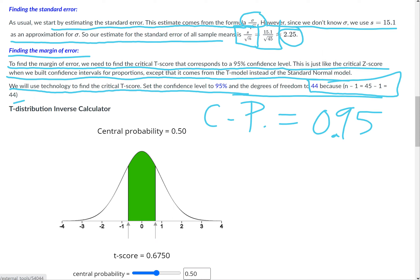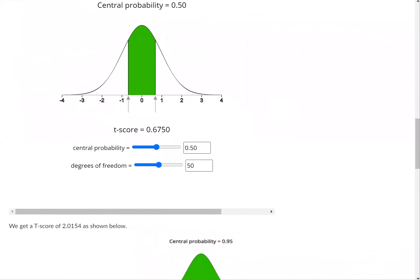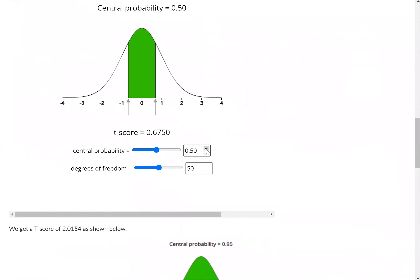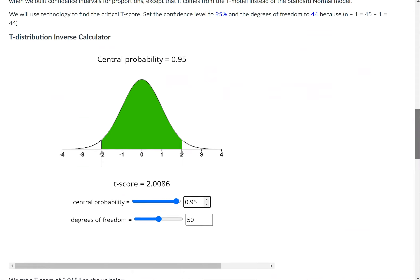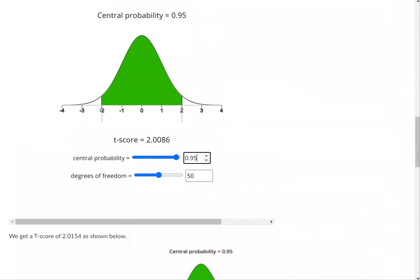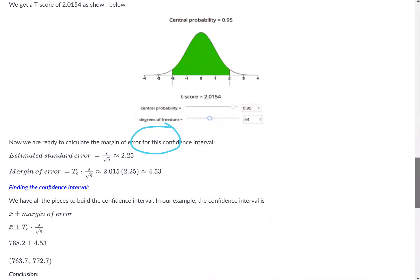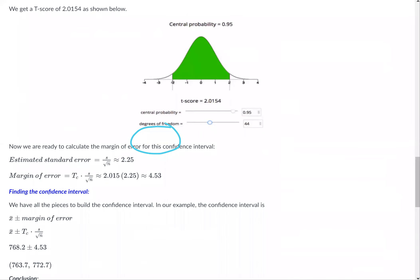So we set those values in the applet. Central probability should be 95%, degrees of freedom was 44. So it looks like our t-score in this case is 2.0154. Now we'll scroll down and see what we're going to do with that.